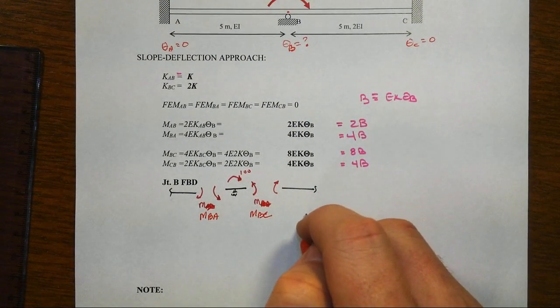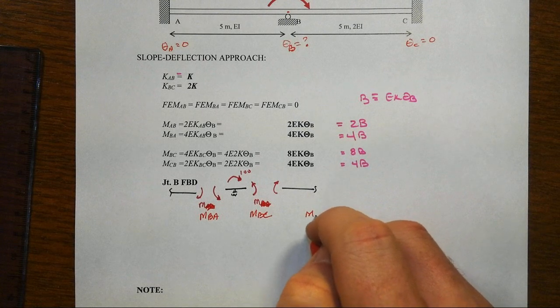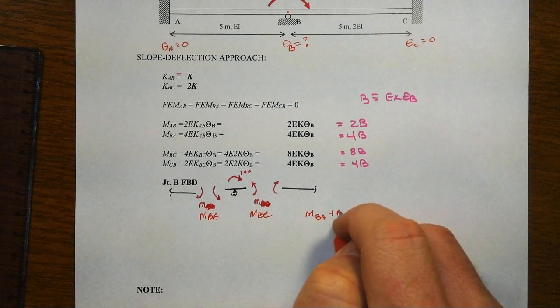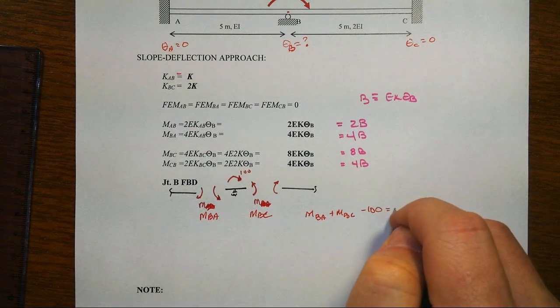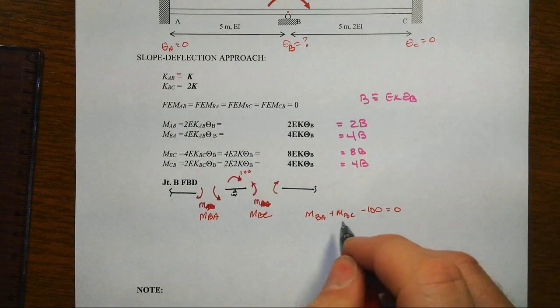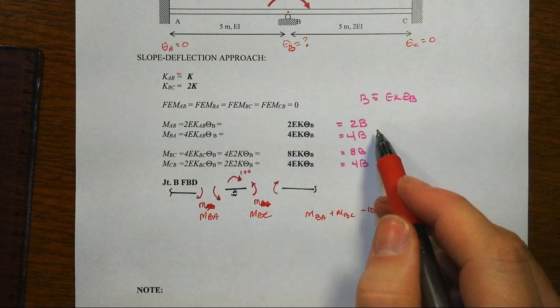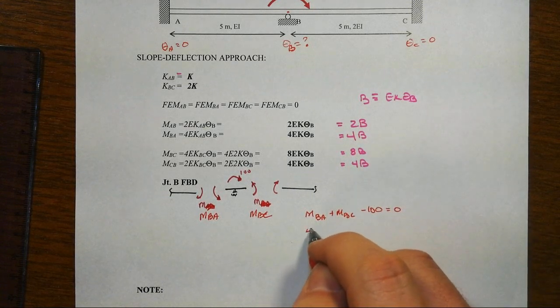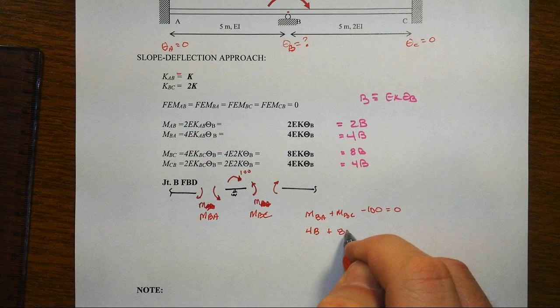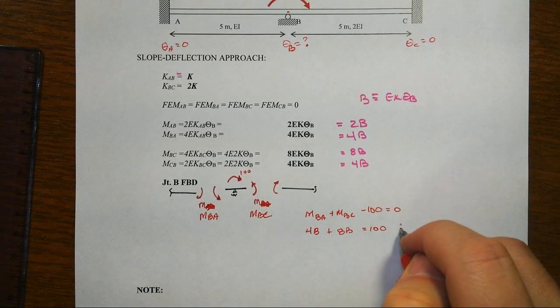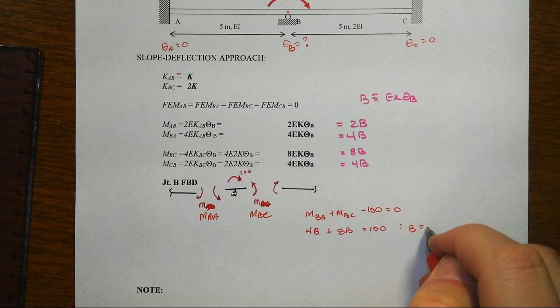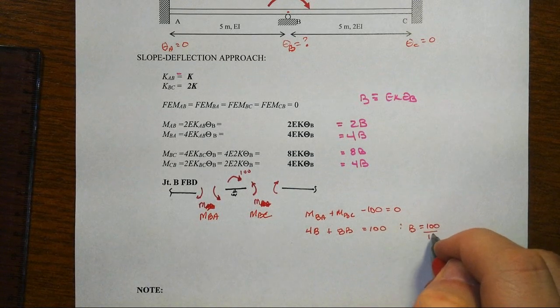And the simple equilibrium equation then of course is that MBA plus MBC and then minus 100 is equal to 0, so therefore obviously MBA plus MBC is equal to 100, or in this case 4B plus 8B is equal to 100, and therefore B is equal to 100 divided by 12.